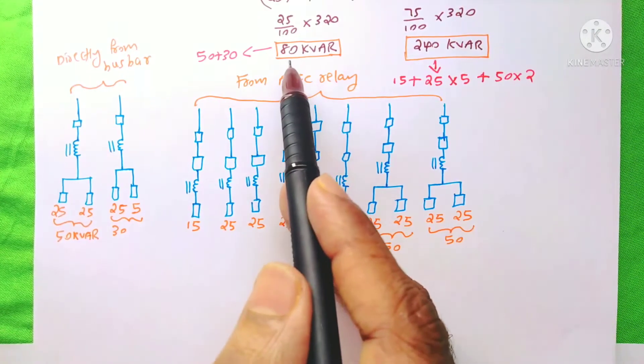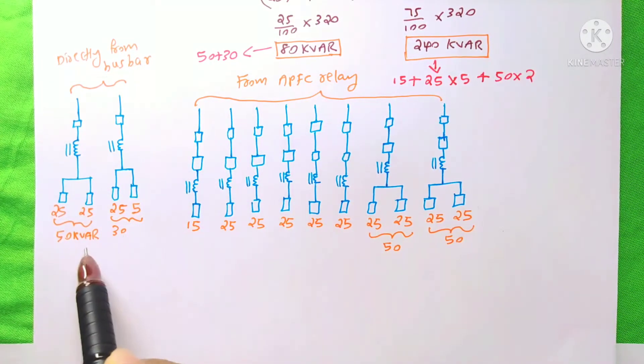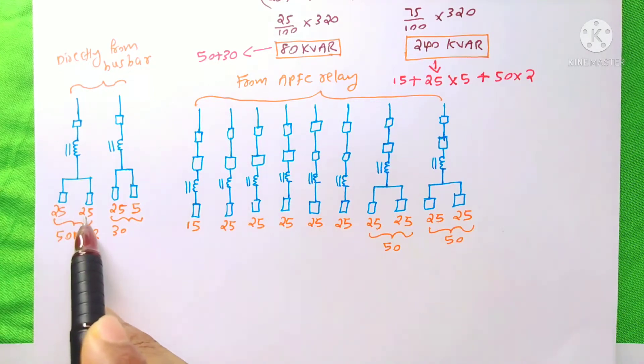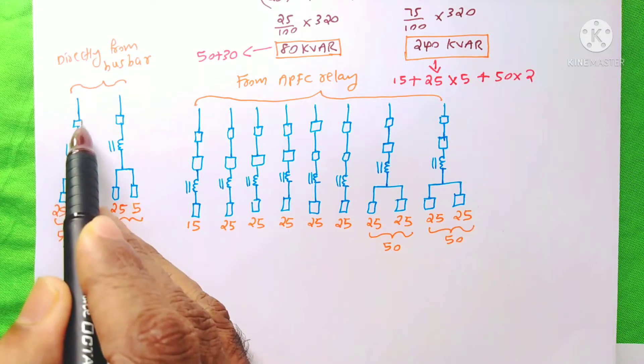I have divided this 80 kVAR into 50 plus 30. This 80 kVAR is here. This 50 kVAR I again divided into 25 plus 25. And I connect it into parallel and directly give it to a breaker.